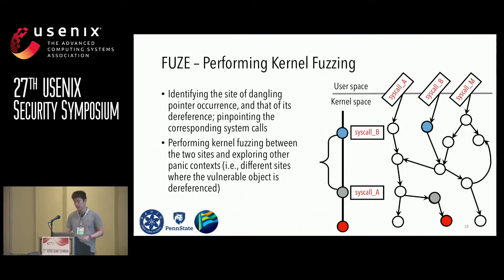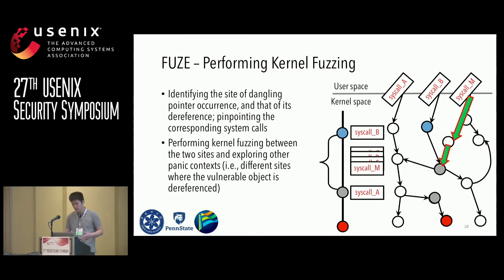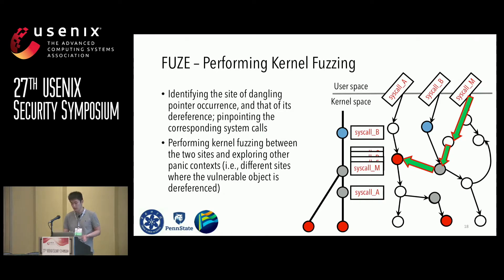After we have this critical information, the second step of FUSE is performing kernel fuzzing. During the correct time window extracted by the previous step, instead of executing the original system call in the POC, we try all kinds of system calls right after dangling pointer occurrence. Fuzzing in such a context may trigger different dereferences of the dangling pointer. Hopefully, we can find another system call — syscall M — that dereferences the vulnerable object in a different way, which increases the probability of discovering useful exploitable primitives. We use Syzkaller for such kernel fuzzing.